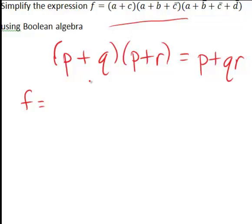For example, a is common to both those brackets. So it will become a plus the other terms there, which is c, multiplied by the other terms in this bracket, which is b plus c bar.